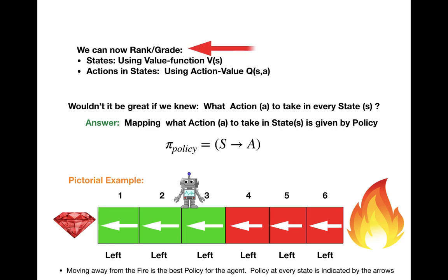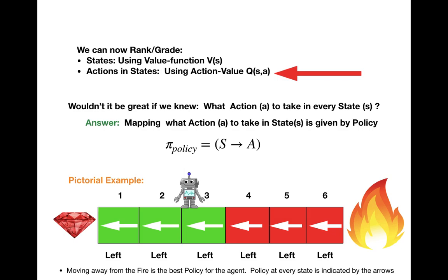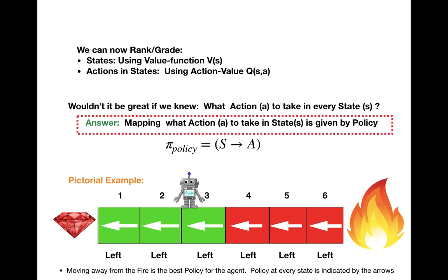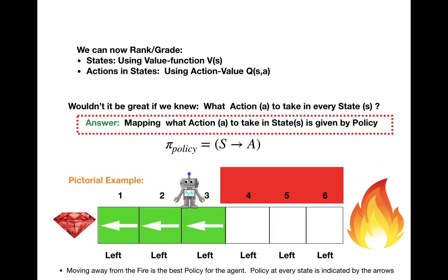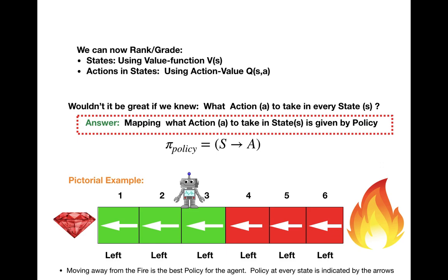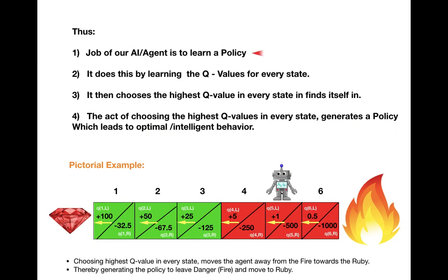We now know how to rank states using the value function and how to rank actions using the Q-value function. The next concept is a policy. A policy maps an action to a state — if our robot finds itself in a particular state, it is the job of the policy to decide what action to take. In the example below, the policy tells the robot to move to the left in every state, indicated by white arrows pointing left. Looking at the big picture, the policy is telling the robot to go away from the fire and toward the ruby.